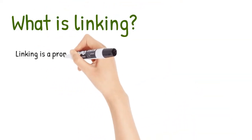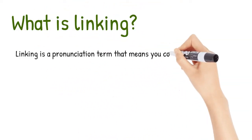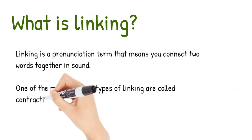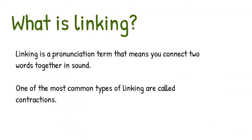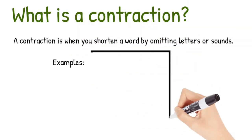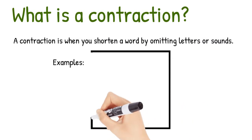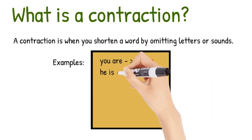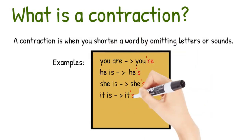What is linking? Linking is a pronunciation term that means you connect two words together in sound. One of the most common types of linking are called contractions. A contraction is when you shorten a word by omitting letters or sounds.